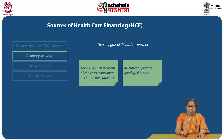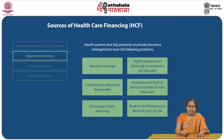The second source of healthcare financing is voluntary private insurance. Strengths are: greater freedom of choice for consumers to choose their provider, and incentive to provide good quality care. However, health systems that rely primarily on private insurance have the following problems: very low coverage; highly regressive in financing as premiums are risk-rated; contributions determine the benefits; moral hazards both in terms of number of visits and costs; and it encourages cream-skimming, which can result in limited access for vulnerable sections of society and HIV-infected patients. It also tends to be inflationary — less successful in cost containment than those relying on public finances, according to Newhouse 1993.